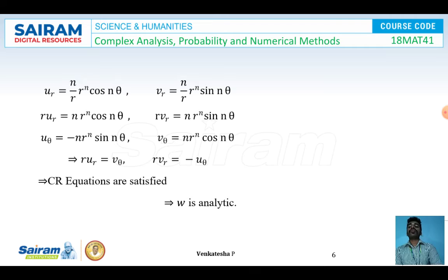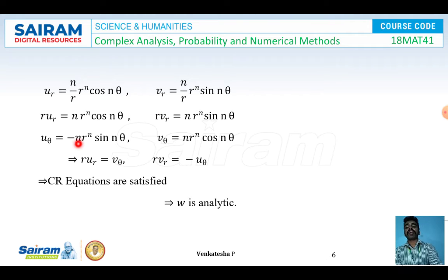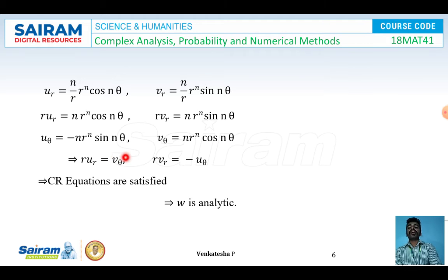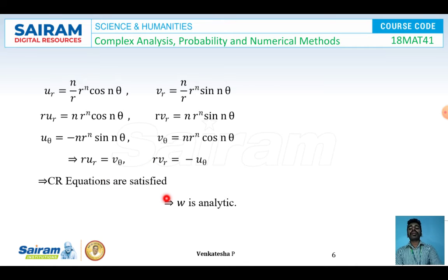Differentiating with respect to θ: u_θ = -n·r^n sin nθ and v_θ = n·r^n cos nθ. Comparing, r·u_r = v_θ and r·v_r = -u_θ. These are the required CR equations in polar form. Since CR equations are satisfied, f(z) = z^n is analytic.